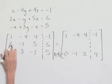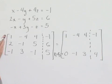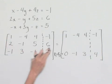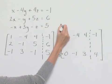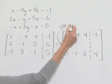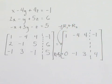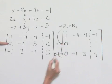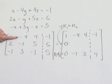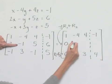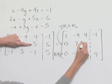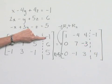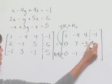Next, we take our first row, multiply it by negative 2, and add that to our second row to replace row 2. So negative 2 times row 1 plus row 2 gives: 1 times negative 2 plus 2 is 0; negative 4 times negative 2 is 8, and 8 minus 1 is 7; negative 2 times 4 is negative 8, plus 5 is negative 3; and negative 1 times negative 2 is 2, plus 6 is 8.